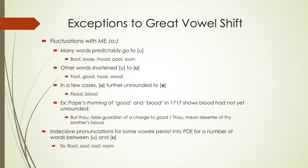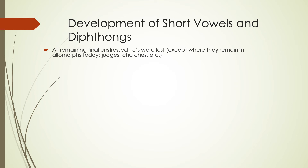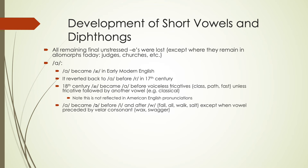Thinking about some other vowel changes: all of the remaining final unstressed E's were pretty much lost, only surviving in allomorphs like plurals — 'judges' and 'churches' — where we need that sound between strident consonants. The A sound became AY frequently in Early Modern English, and sometimes reverted back to an AH before an R. In the 18th century, A became AH before a voiceless fricative — so things like 'class,' 'path,' 'fast' — but this is more British English pronunciation. American English didn't switch back to an AH sound, so we still say 'class,' 'path,' and 'fast.'